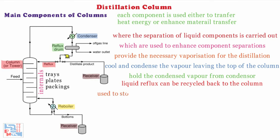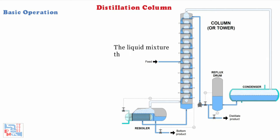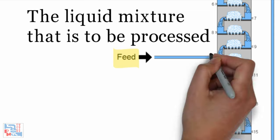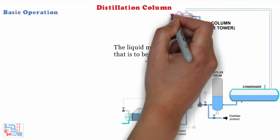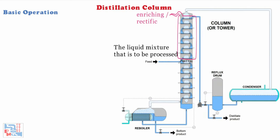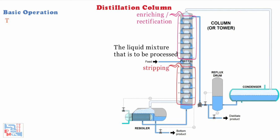Now let's talk about basic operations and terminology used. The liquid mixture that is to be processed is known as the feed and this is introduced usually somewhere near the middle of the column to a tray known as the feed tray. The feed tray divides the column into a top enriching or rectification section and a bottom stripping section. The feed flows down the column where it is collected at the bottom in the reboiler.